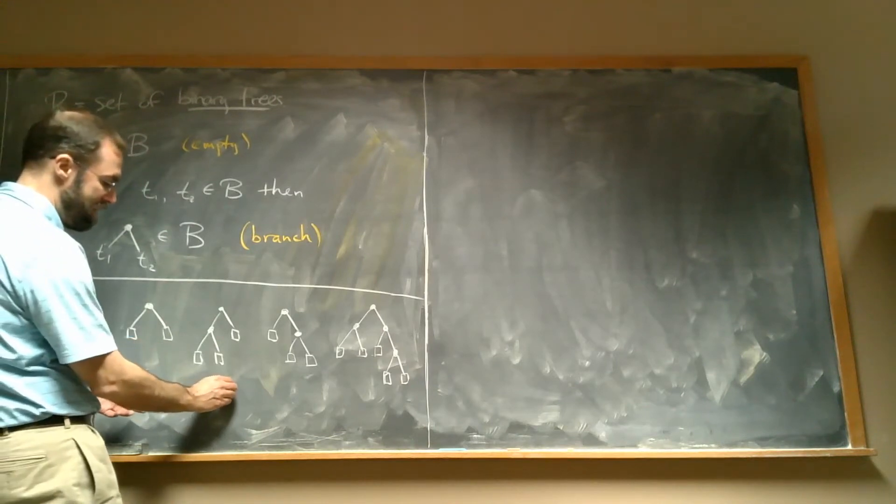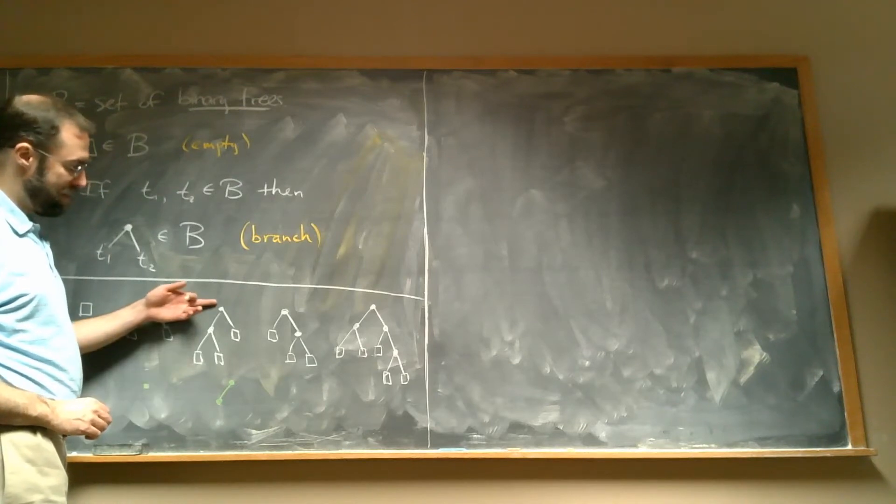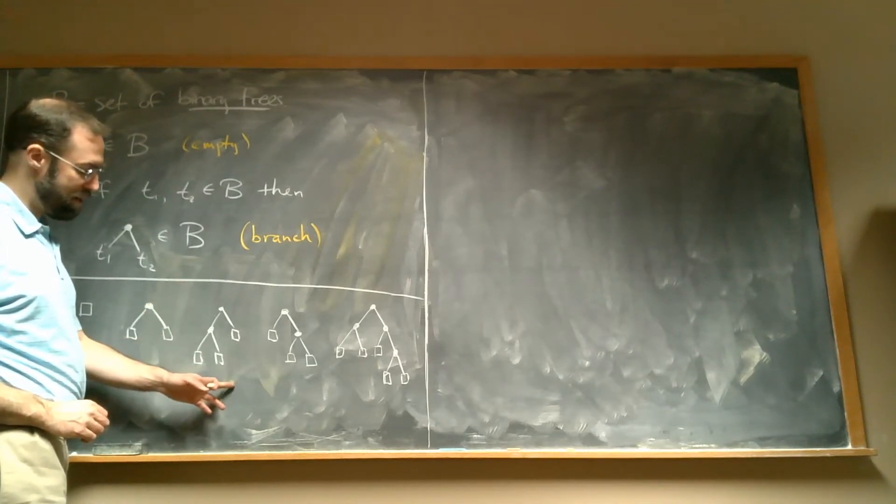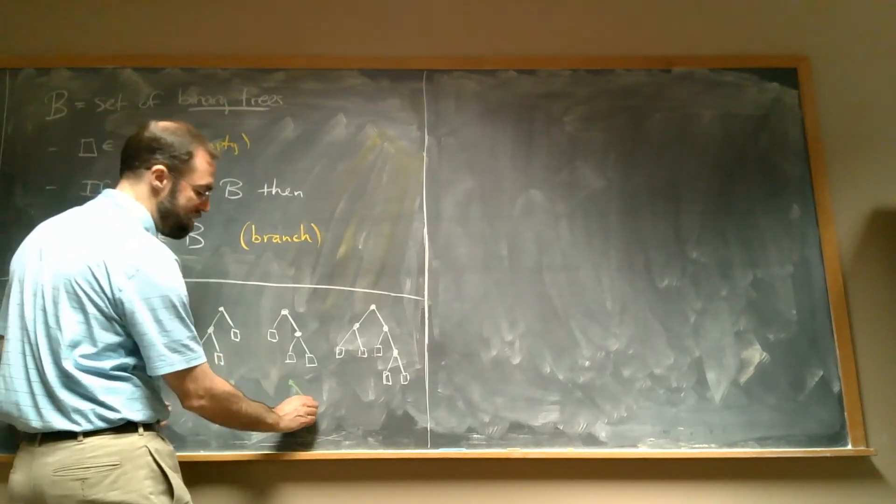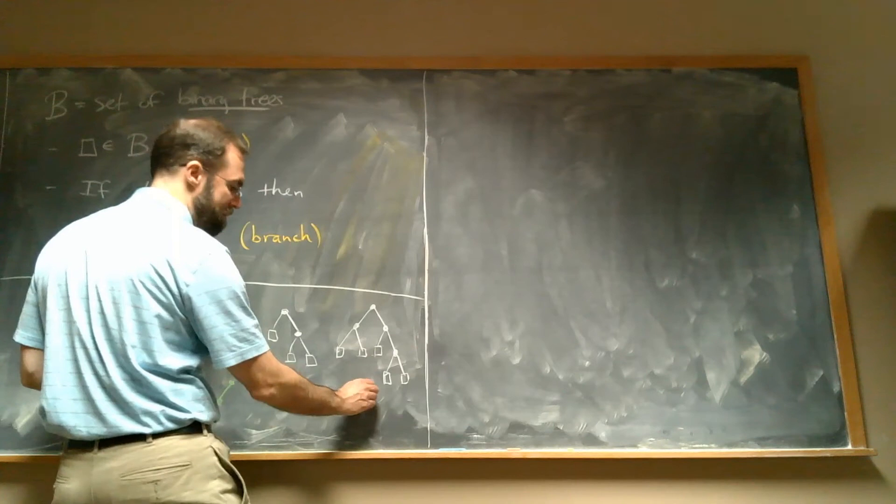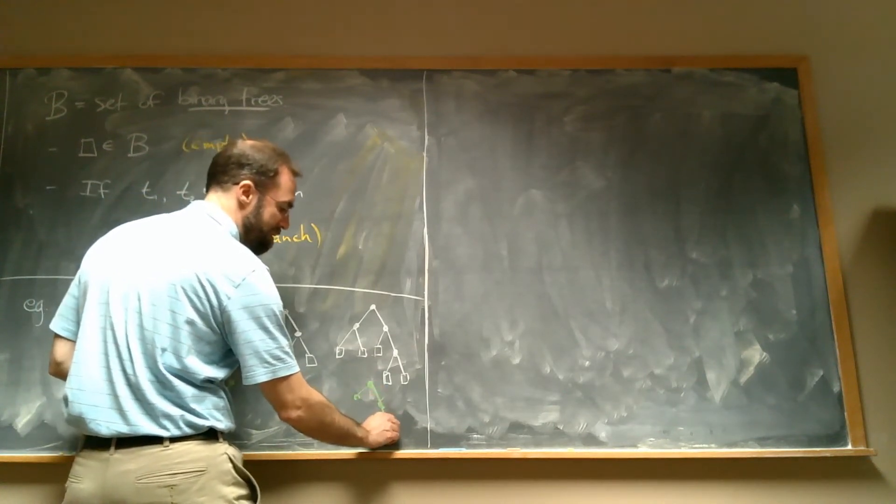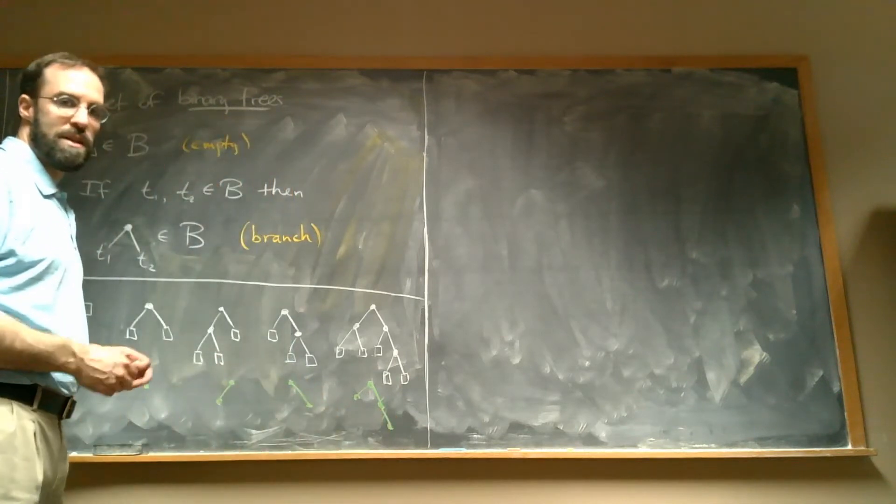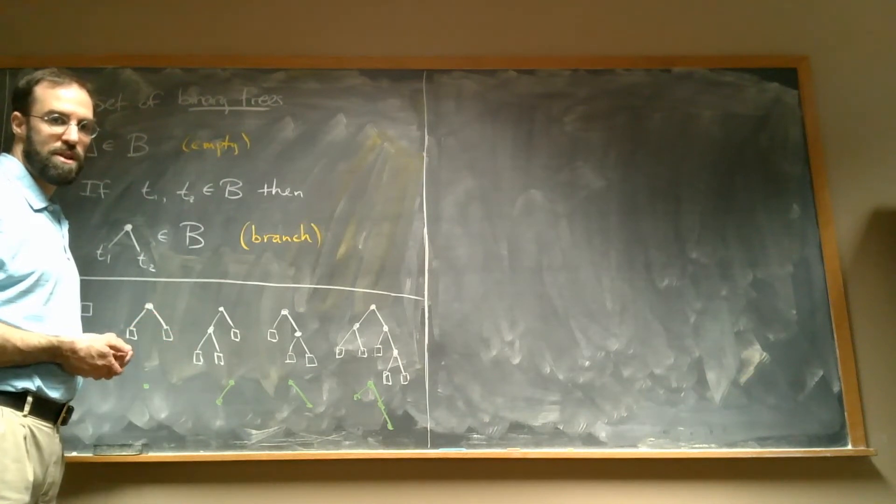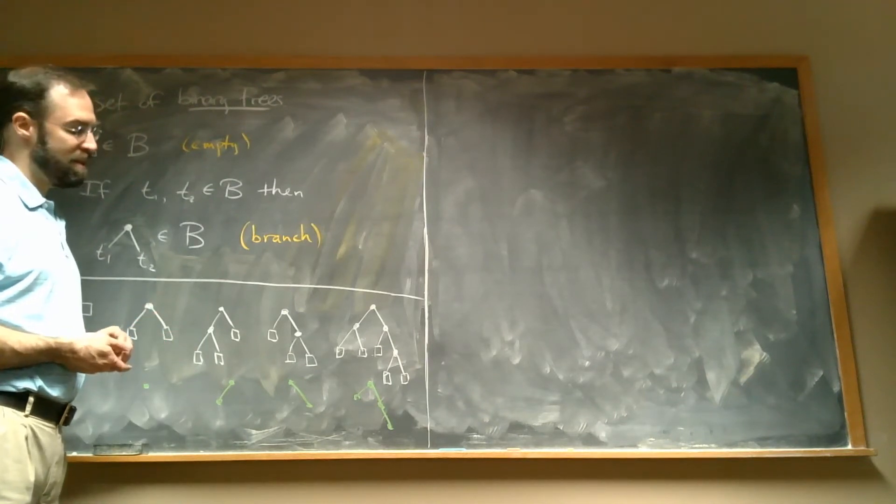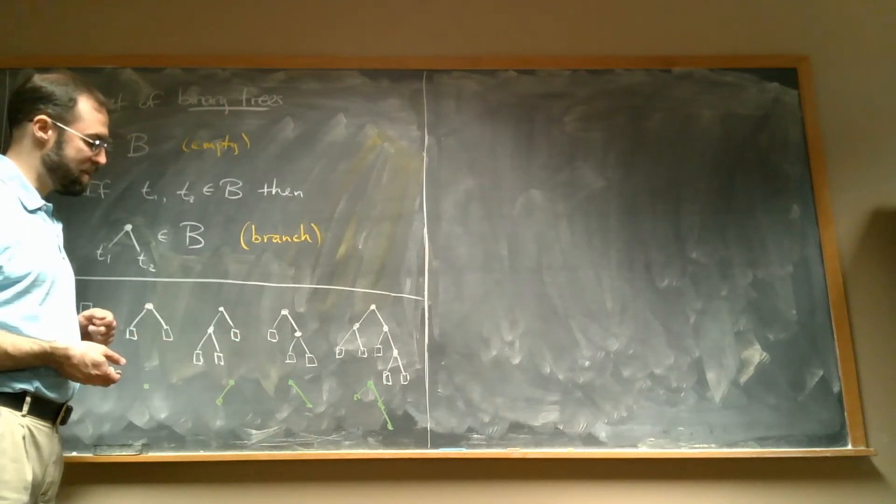So as kind of an abbreviation, I'm going to draw this as a single dot, and we just understand that if I don't put any children under it, it has to just be the empty tree. This one I'm going to draw just as like this. Again, we understand that there has to be an empty tree over here and there's empty trees here and here. Basically, I'm just going to delete all those empty trees on the bottom everywhere that I see them. That's just going to make it a little easier for me to draw these without spending a whole lot of time drawing these empty trees.